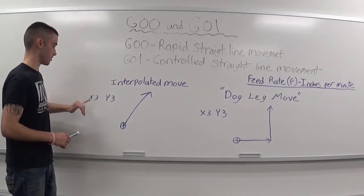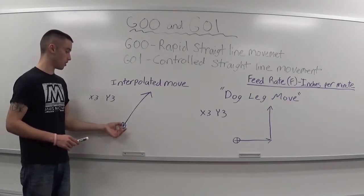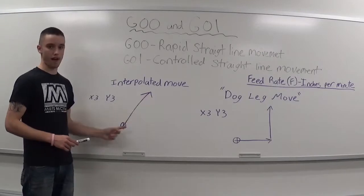for example, like right here we have an x-axis and a y-axis move, x3, y3. Starting here at zero, it'll get to the point x3, y3 at the same time, moving all axes at the same time.